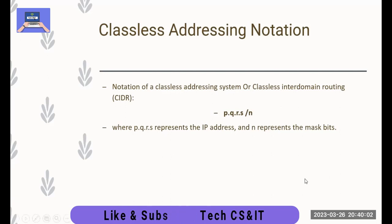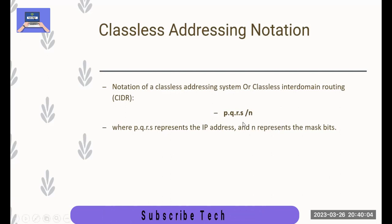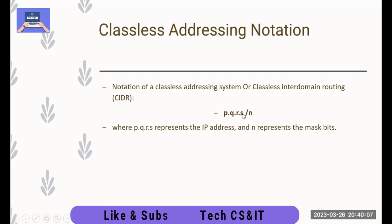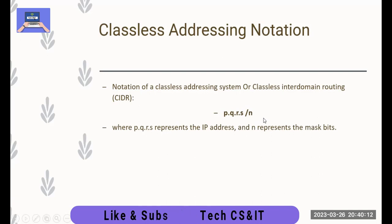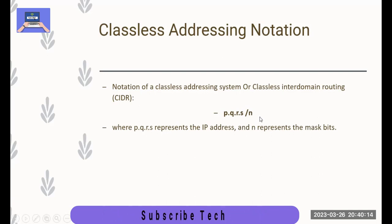Here we have three or four options. They represent the dot notation. Then we have the slash notation — backslash n. Backslash n represents the network and the subnet mask. We don't change them.